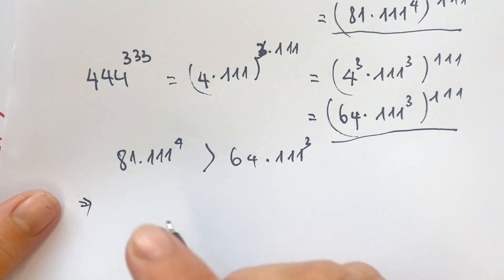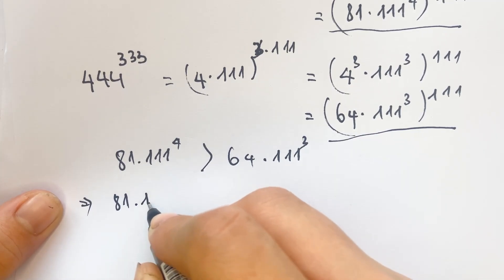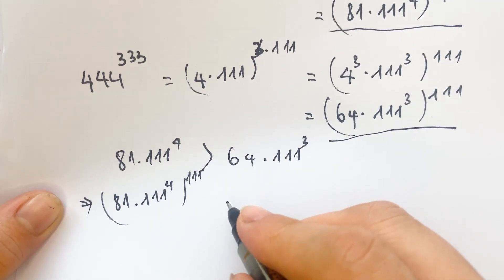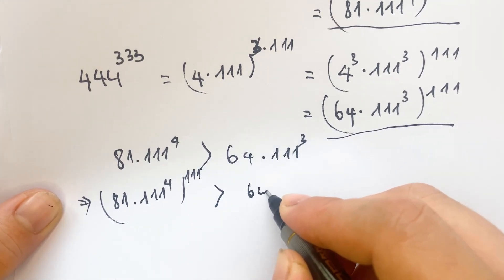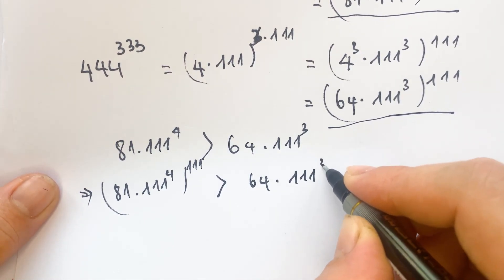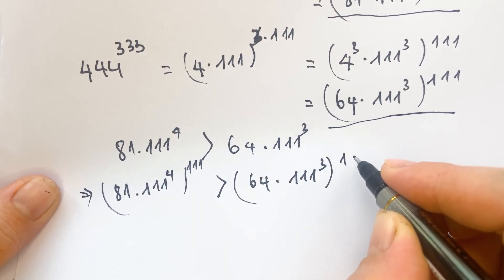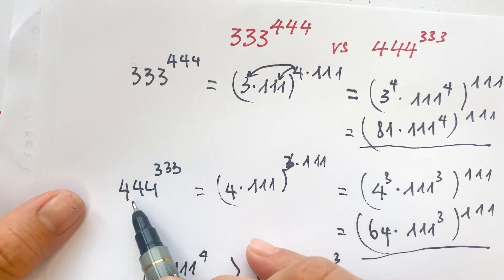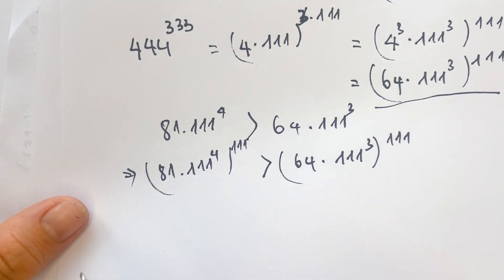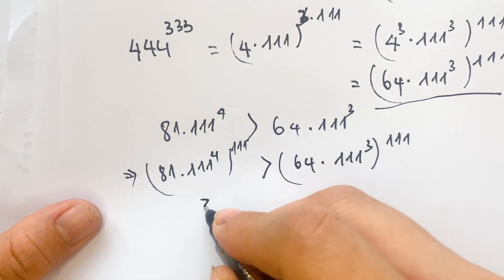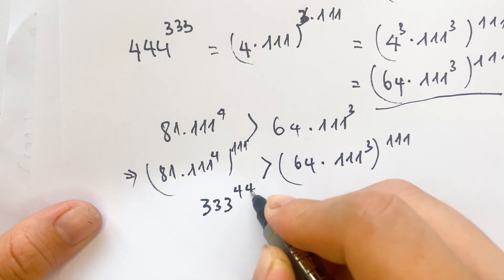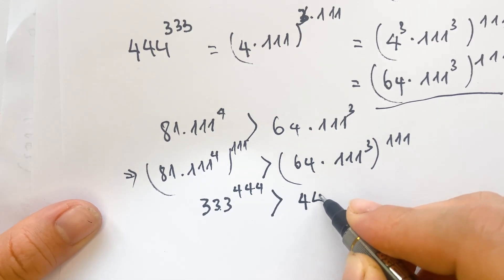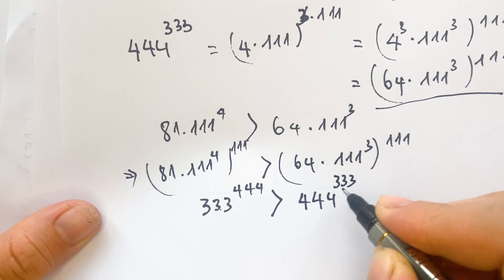So, we now have 81 times 111 to the power 4, whole to the power 111, is greater than 64 times 111 cubed, whole to the power 111. Therefore, we can conclude: 333 to the power 444 is greater than 444 to the power 333.